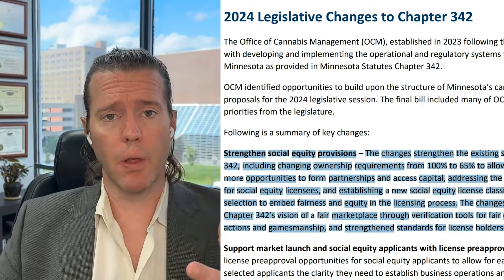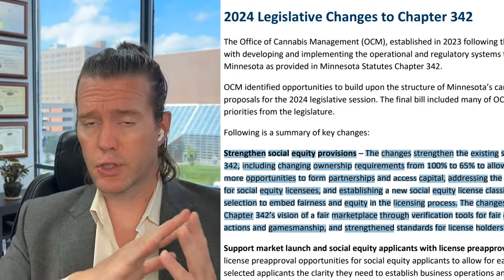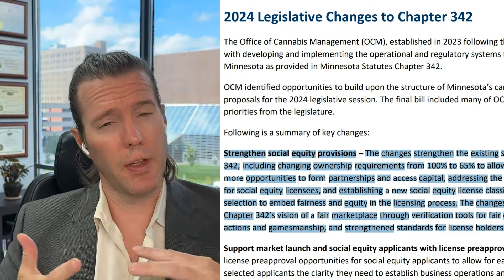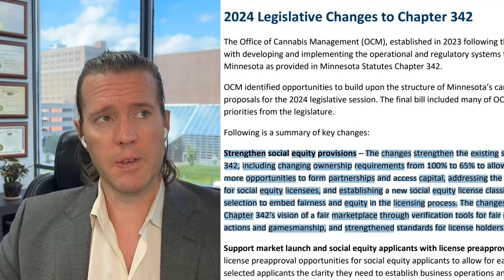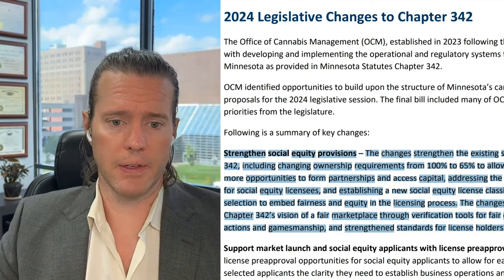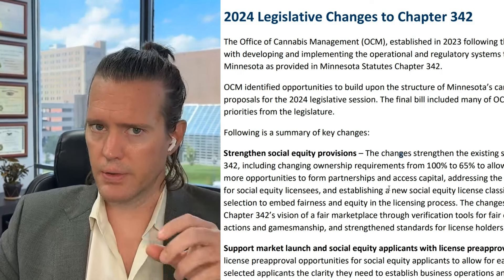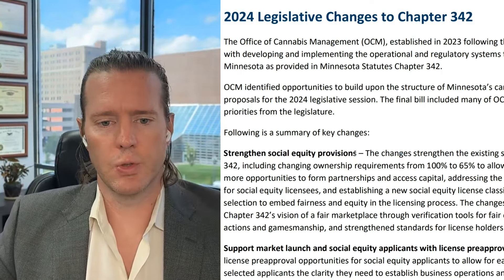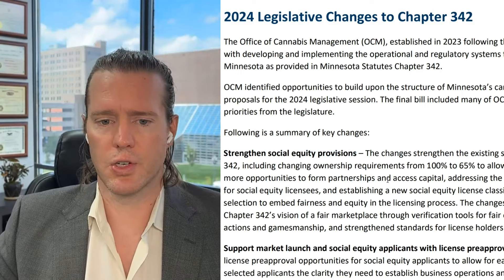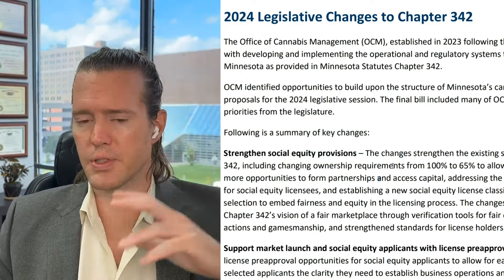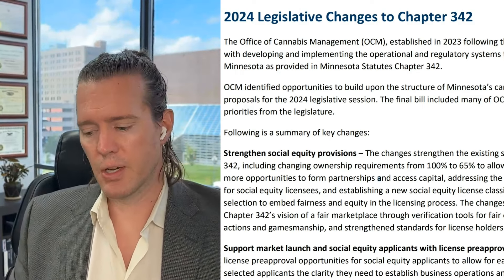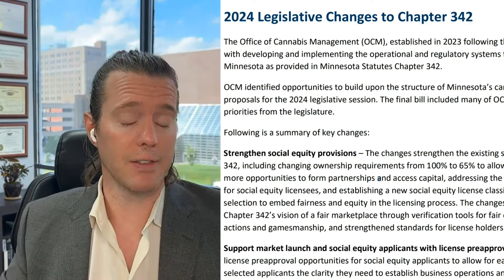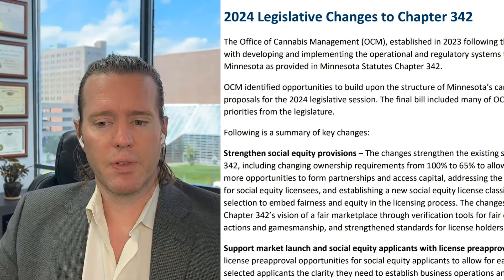Here's what happened this past spring: Minnesota changed their law and created new things. They made a lottery, updated the social equity framework, and created something called a True Party of Interest — which becomes almost as superfluous as your appendix. They were trying to strengthen social equity positions by lowering the ownership requirement from 100% down to 65%, and of course they will not allow for any capital contribution of the social equity applicant for the license itself.